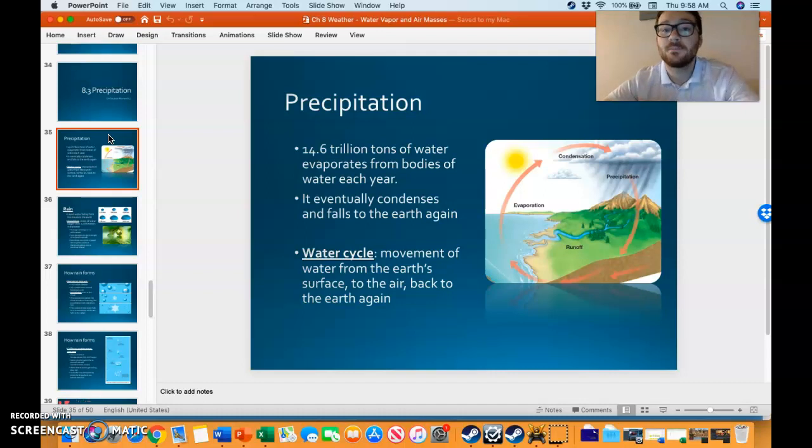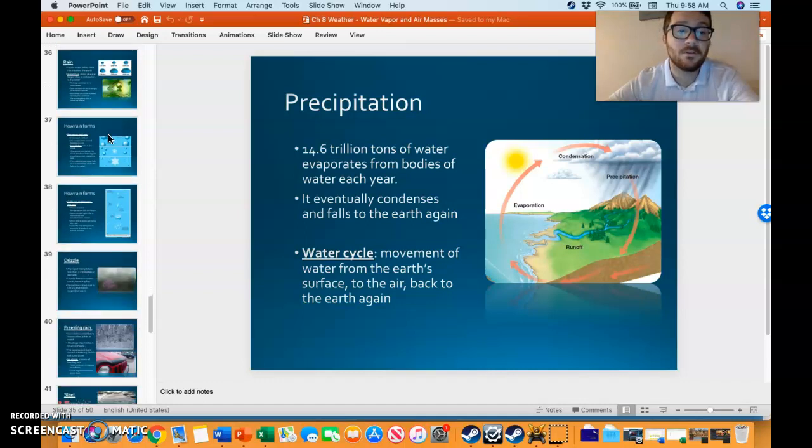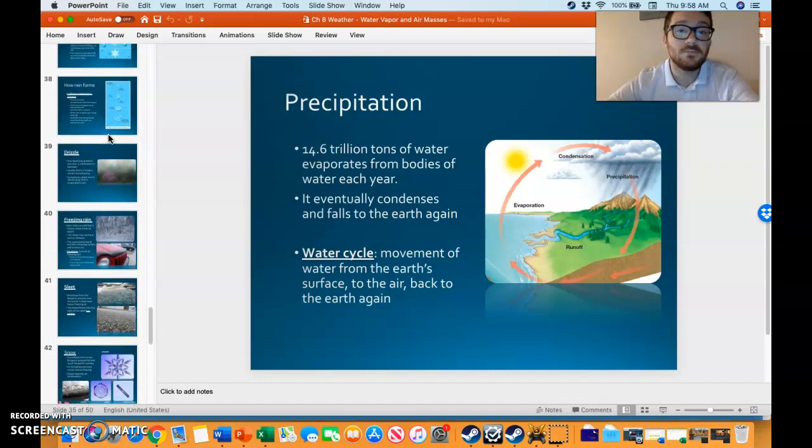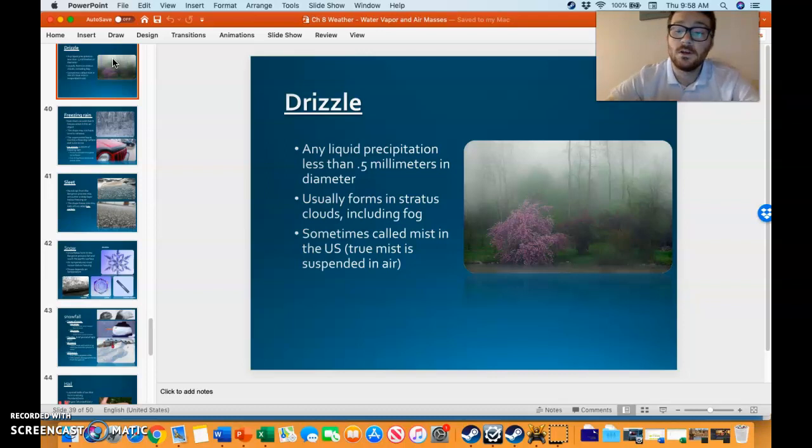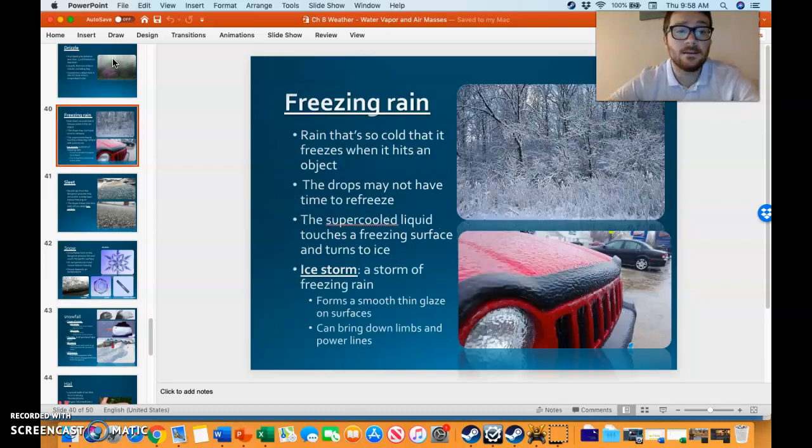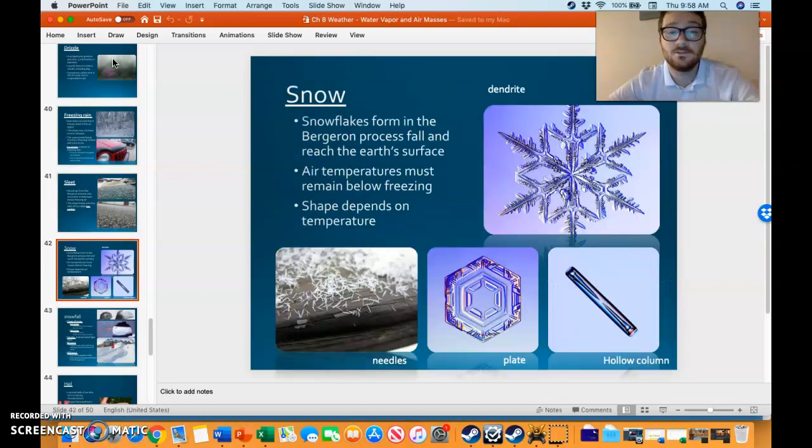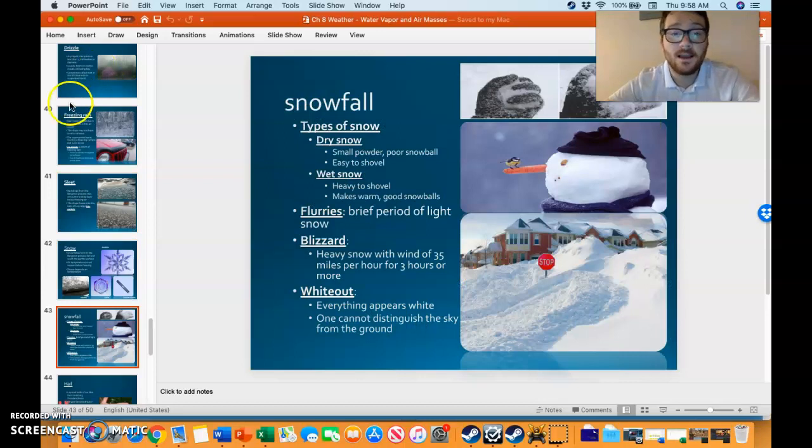Evaporation, condensation, precipitation—sounds like the water cycle, the continual movement of water on earth. It moves 14.6 trillion tons of water. Water can come in many forms when it falls to earth: from drizzle to freezing rain to sleet to snow, many different kinds of snow.